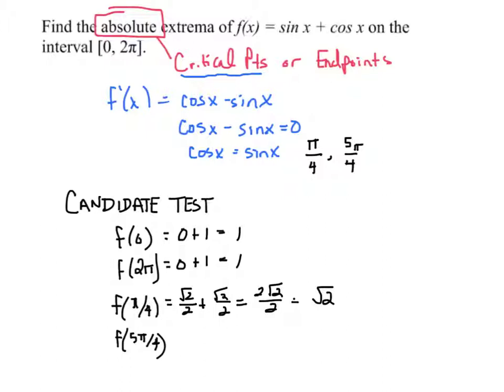Now five pi over four. The sine of five pi over four is negative square root of two over two. And the cosine is also negative square root of two over two. So we have negative two square roots of two over two, which is negative square root of two. So we have found both the absolute maximum and the absolute minimum through candidate test.